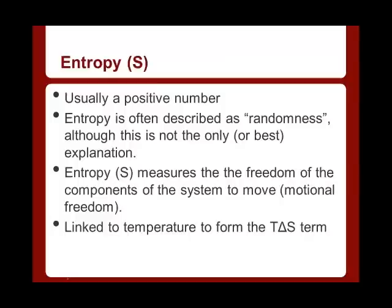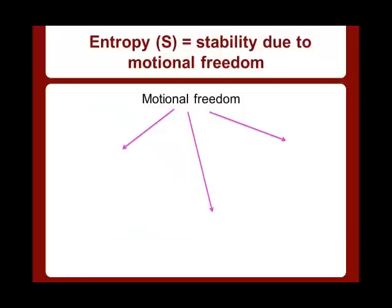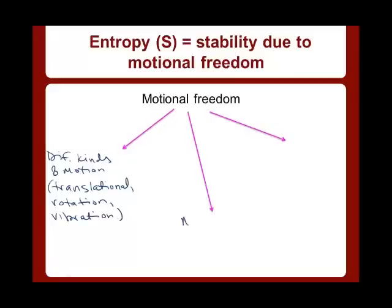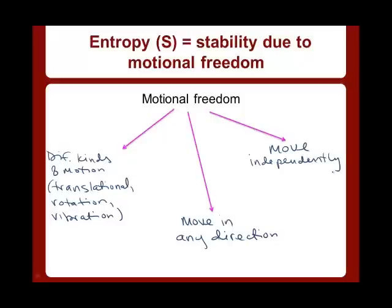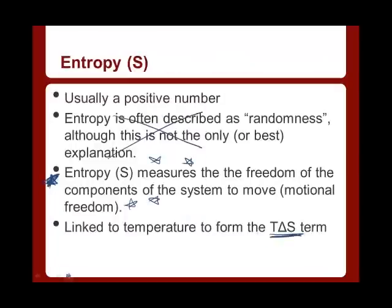Now let's talk about entropy. Entropy is often described as chaos or randomness, but that's not the best explanation. Entropy is really a measure of the freedom of the components of the system to move — motional freedom. The stability that results due to motional freedom can encompass many different kinds of motion: translational, rotational, and vibrational motion. It can be the freedom to move in any direction, or the freedom to move independently. Entropy encompasses all of those kinds of motional freedom. The greater amount of motional freedom the components of a system have, the more it contributes to their overall thermodynamic stability.